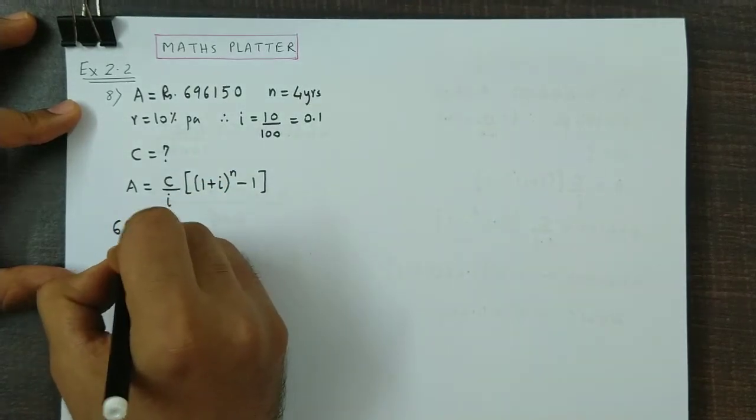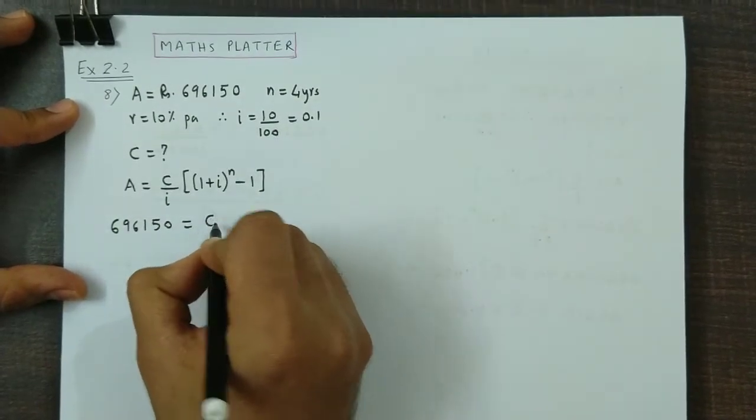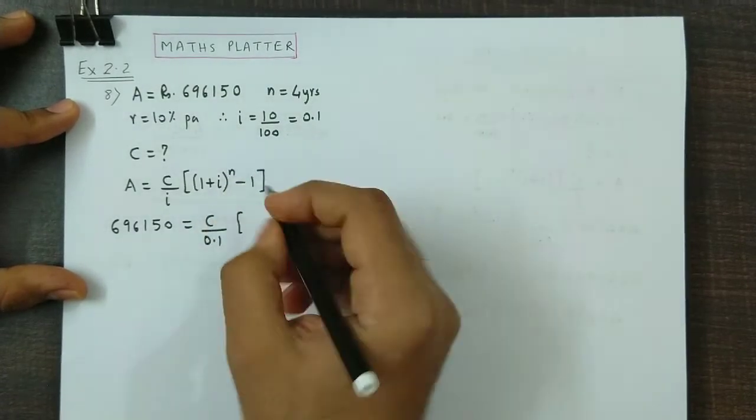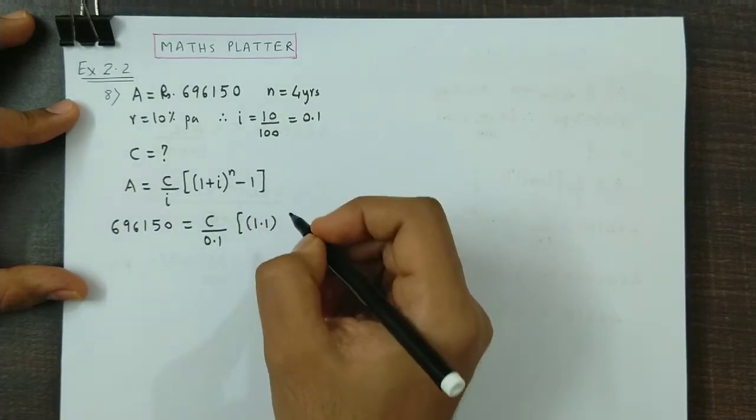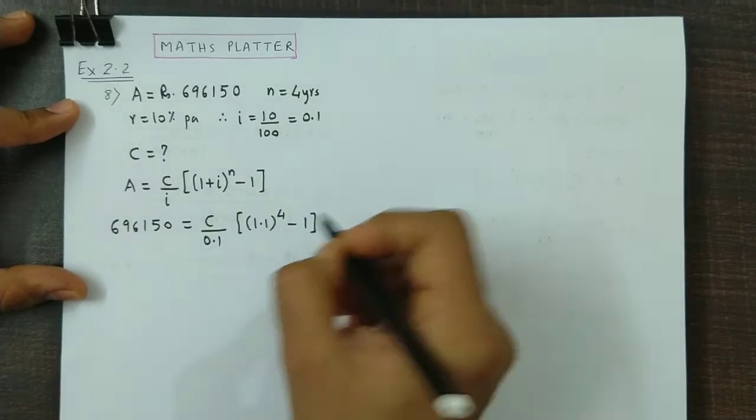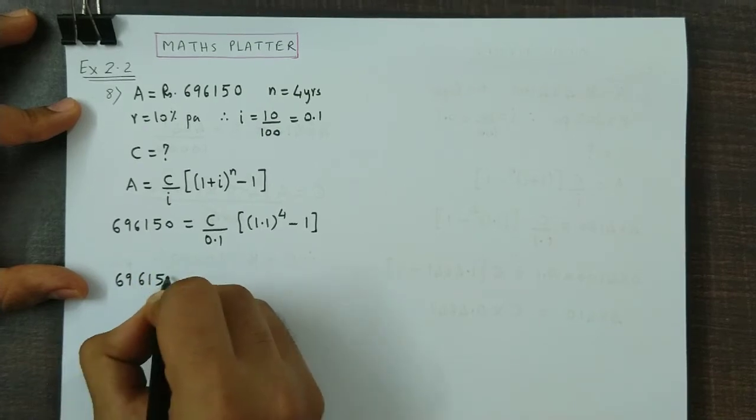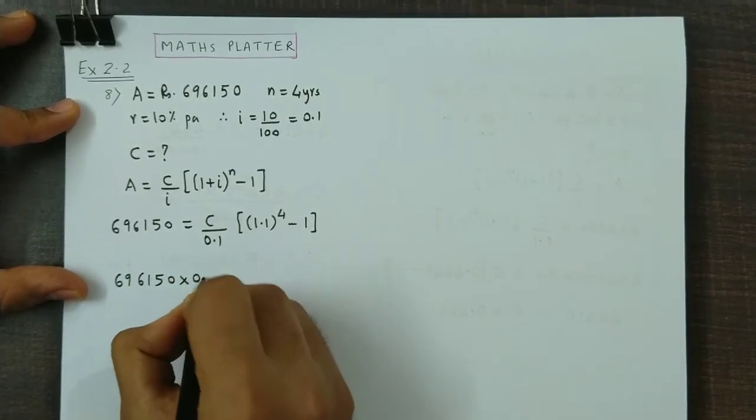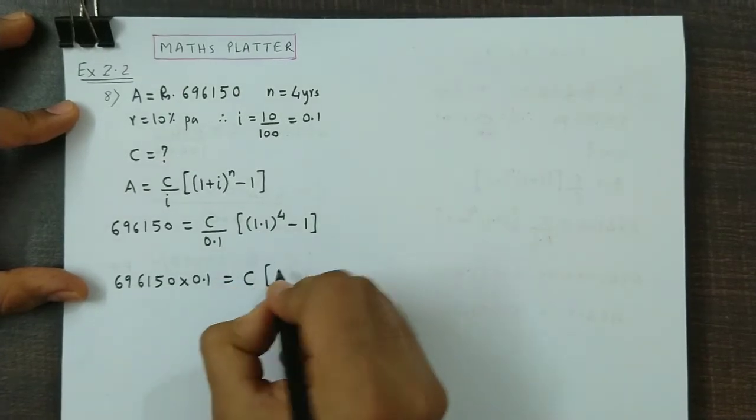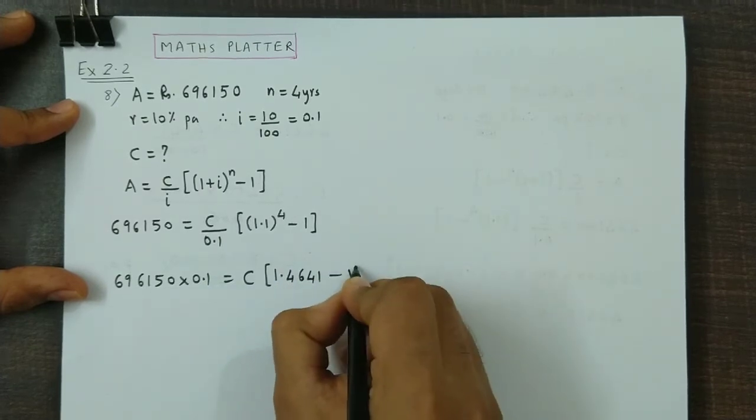This is 6,96,150. C value we don't know. i is 0.1. 1 plus i will have 1.1 raise to n, n is 4 minus 1. So, 696,150 into 0.1 is equal to C into, now this value is provided which is 1.4641 minus 1.